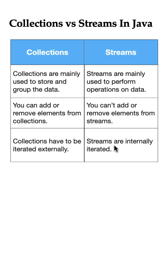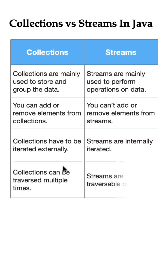Collections have to be iterated externally using a for loop or iterator, whereas streams are internally iterated — streams perform the iteration internally behind the scenes for us using the forEach method.